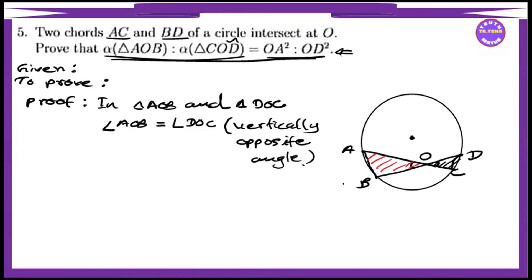This is BAC also — we call it angle DOC. This is B-A-C and B-D-C. Angle B, A, C and angle B, D, C. Angle A equal to angle D.